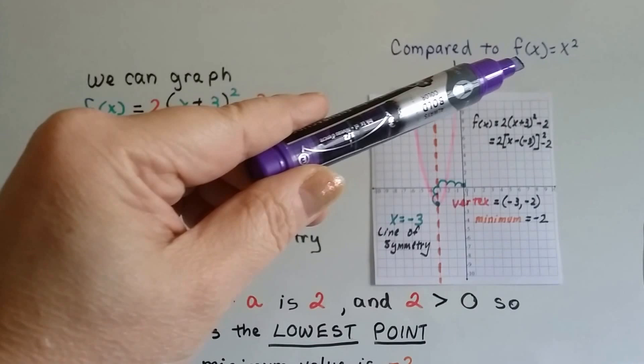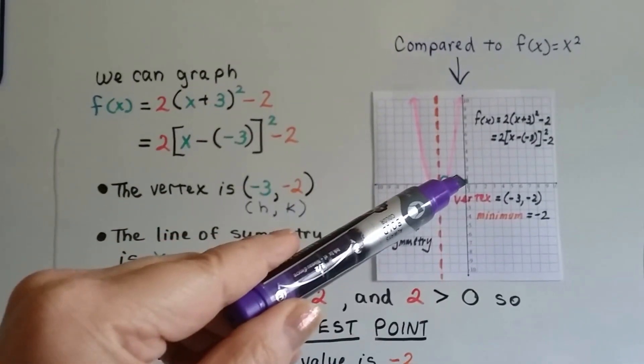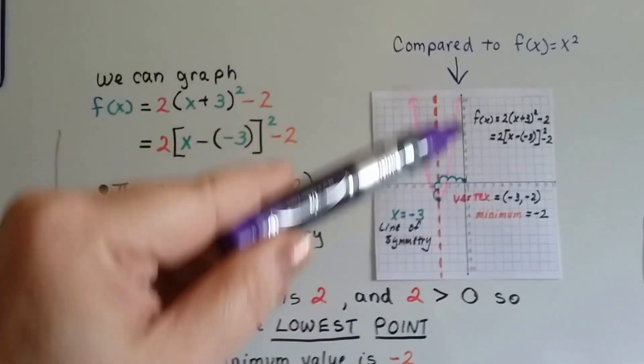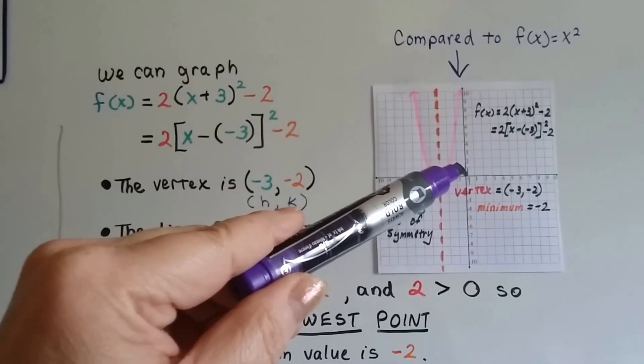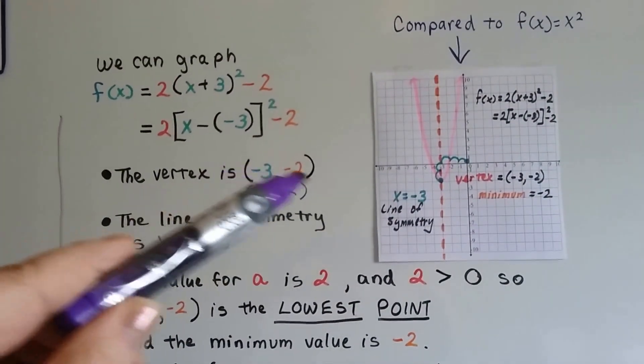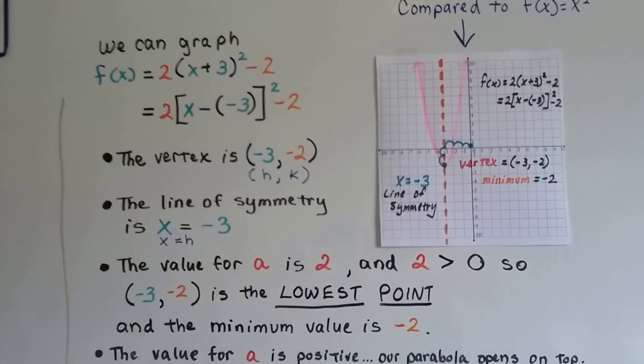Instead of the origin, compared to the function f(x) = x², which would have a line of symmetry on y, and its vertex would be at the origin. Now, because we're at (-3, -2) for our point, that's our vertex, right there.